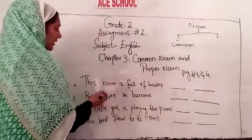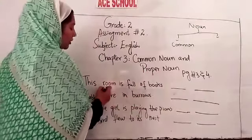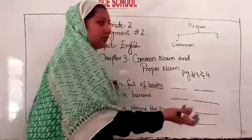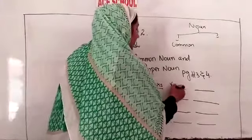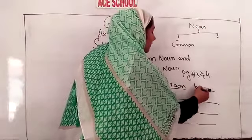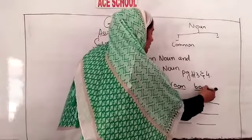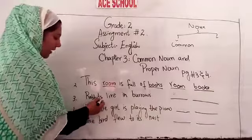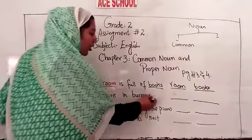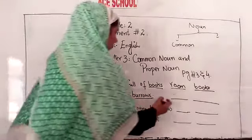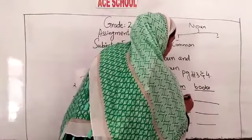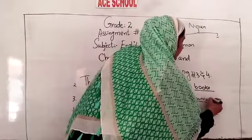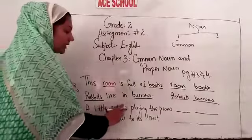This room is full of books — 'room' is a name of a place, so it's a common noun; 'books' is a name of a thing, also a common noun. Rabbits live in burrows — 'rabbits' is a name of an animal, yes it's a common noun; 'burrows' is a name of a place, yes it's a common noun.